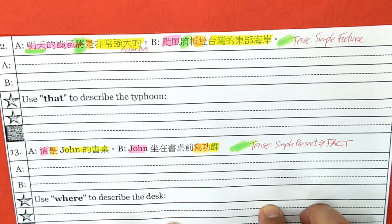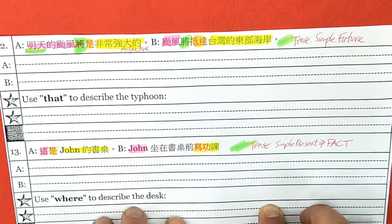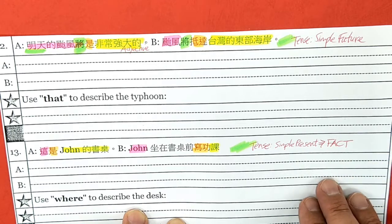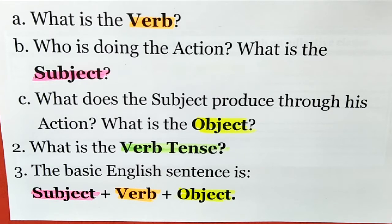Number thirteen. Take out your colors — find the verb, find the subject, find the object. This sentence is simple present — again, it's a fact. Make sure you color everything and write down all the notes. We have identified the verb, the subject, and the object in each sentence. We have figured out the verb tense. Now we are going to translate. Remember: subject, verb, object — S-V-O.